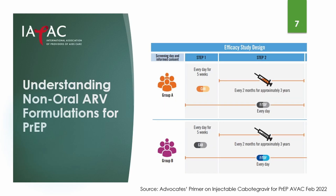Results from two large efficacy trials, HPTN083 and HPTN084, found that injectable cabotegravir, also known as cab LA, given every two months was effective as PrEP in preventing HIV in gay men and other men who have sex with men, transgender women, and cisgender women. In long-term follow-up presented at the AIDS 2022 conference in Montreal, cab LA continued to be 89% more effective in preventing HIV infection compared to oral tenofovir and 3TC.